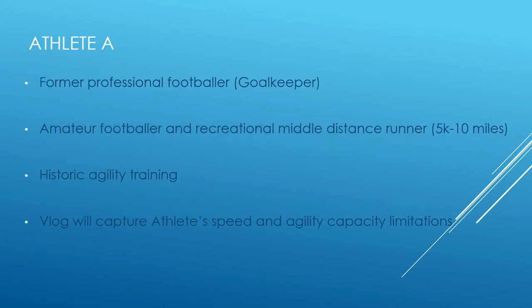An introduction to our athletes. Athlete A is a former professional goalkeeper. He's an amateur footballer and recreational middle distance runner. He does have some historic agility training, albeit in excess of 20 years ago.